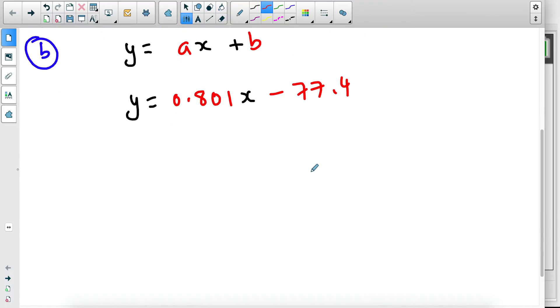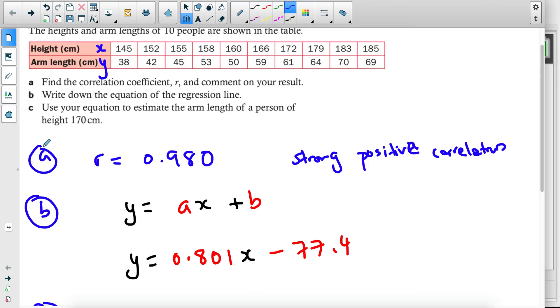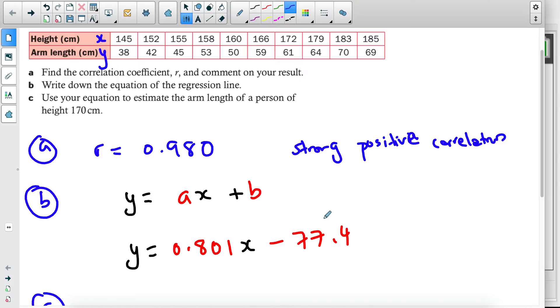You've expressed the results that we have in a more predictable way. So we now have an equation, a linear equation, to express this relationship between the height and the arm length.